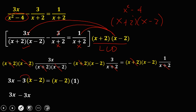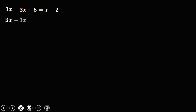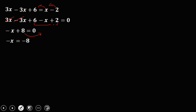Simplify: negative 3 times x is negative 3x, negative 3 times negative 2 is positive 6, equals x minus 2. Equate to zero and combine like terms: transpose to get negative x, then positive 2 equals 0. Combining 3x and minus 3x gives 0; 6 and 2 gives negative x equals 8. To solve for x, multiply the whole equation by negative 1, so x equals 8.